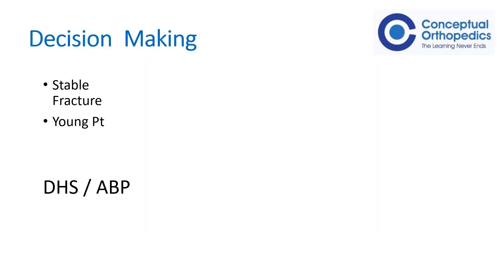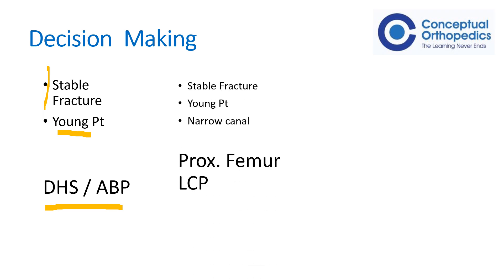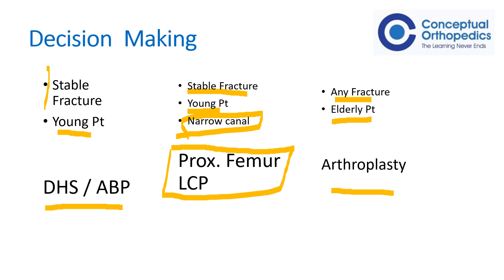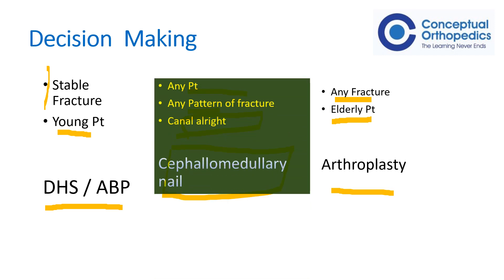Regarding treatment decision-making: if the patient is young with a stable fracture, surface implants like a DHS or angle blade plate can be considered. If the patient is young with a stable fracture but a narrow canal, a proximal femur LCP would be the option. If the patient is elderly with any fracture pattern, arthroplasty should be considered for early mobilization. In any other patient with an adequate canal size, a cephalomedullary nail can be considered.